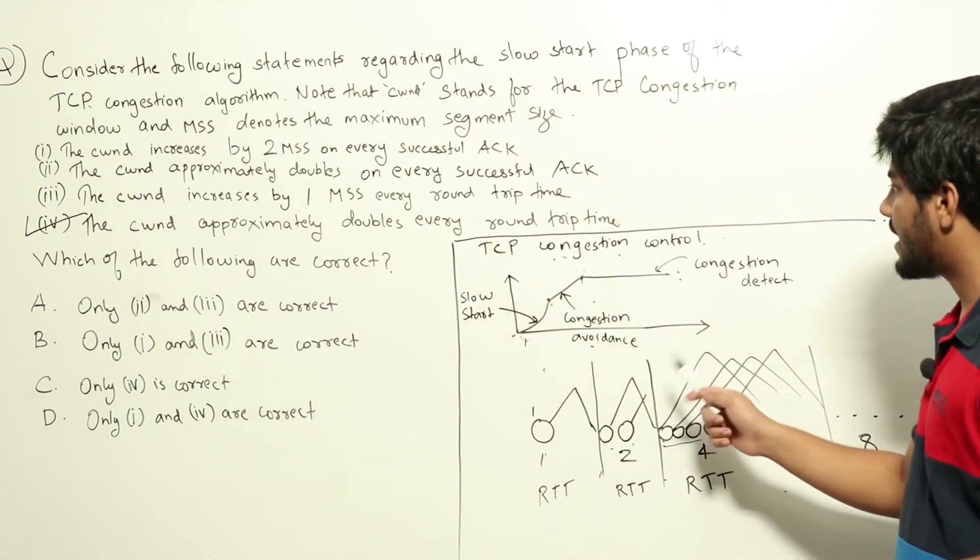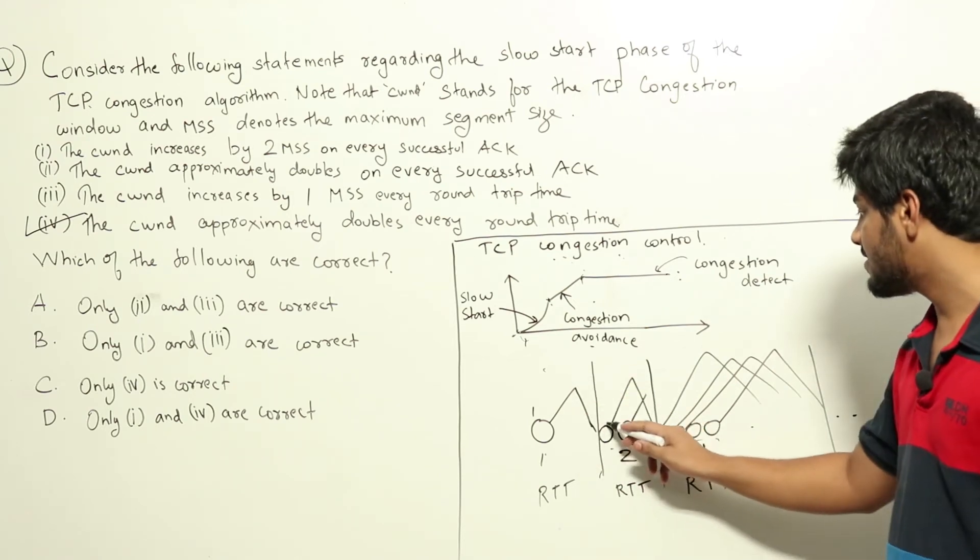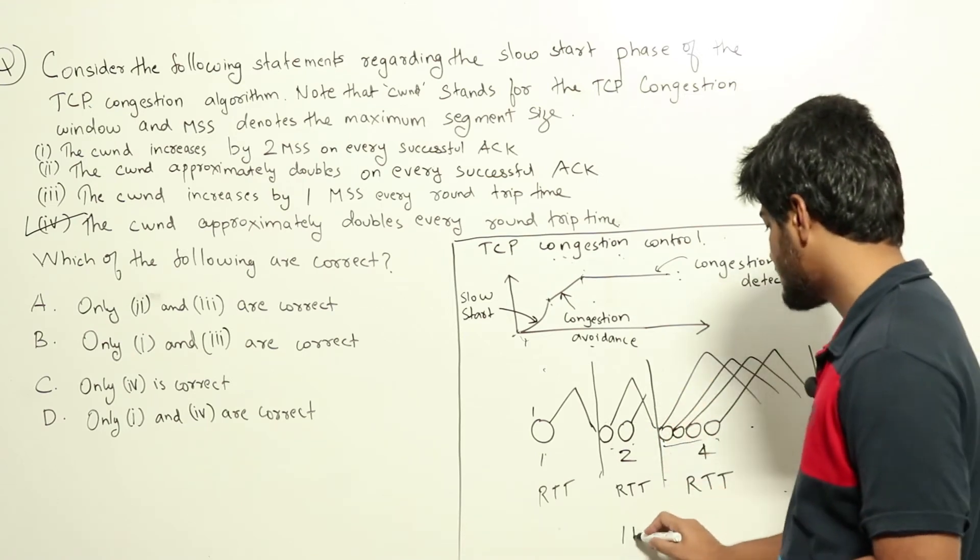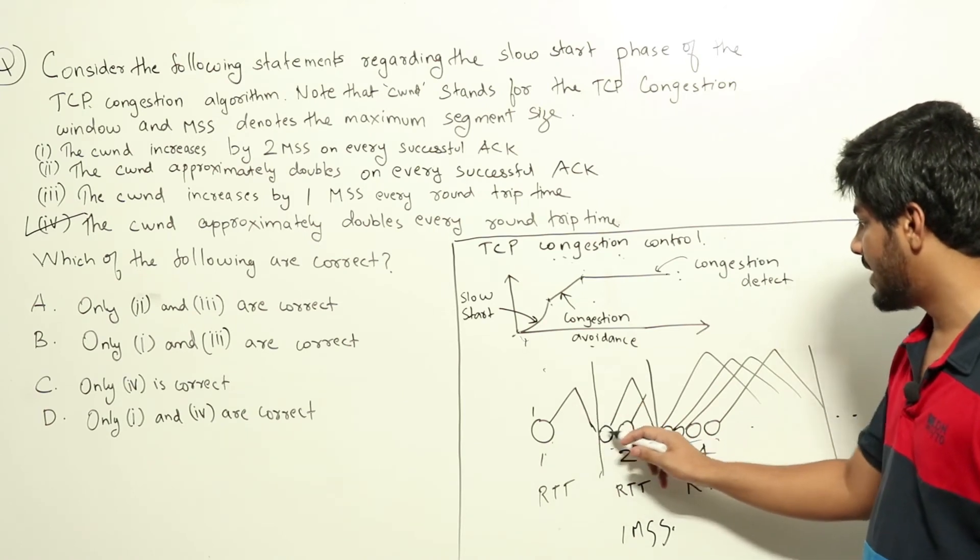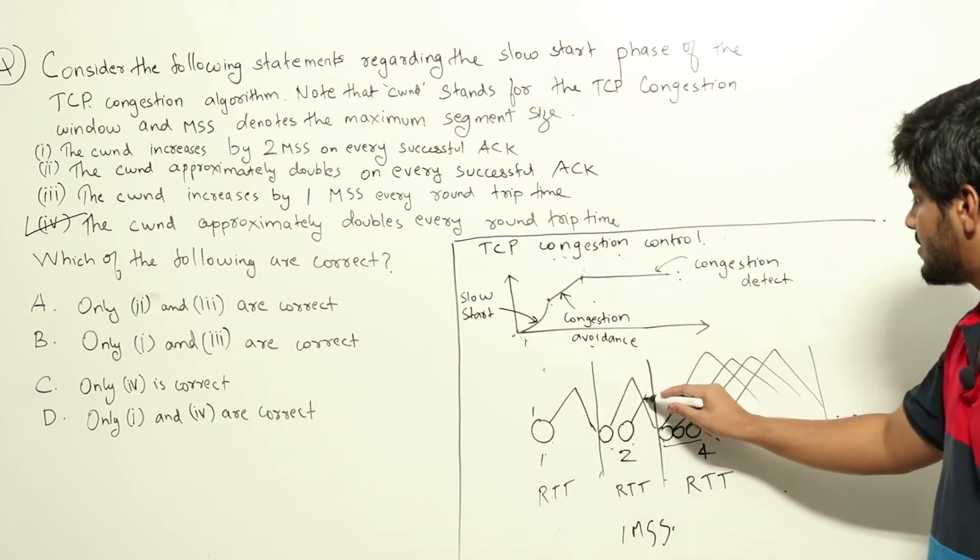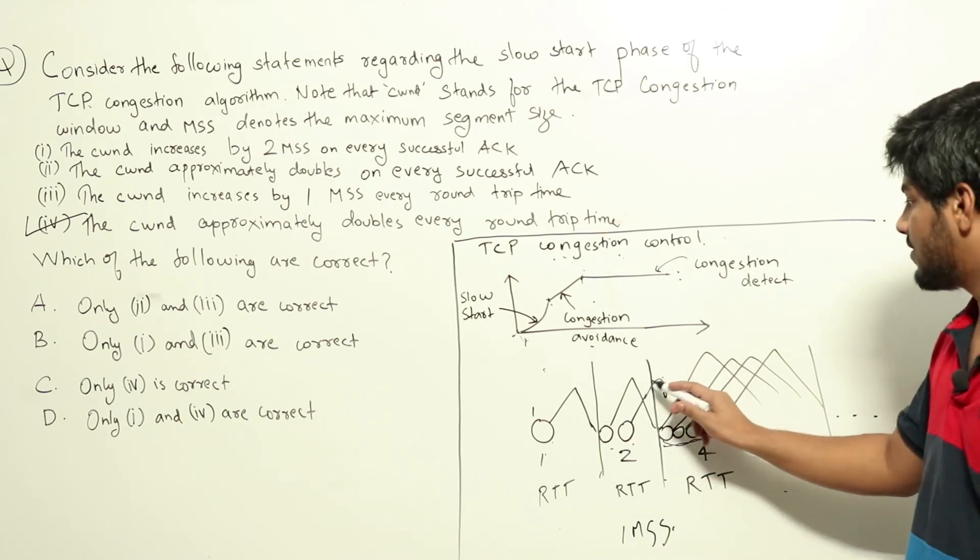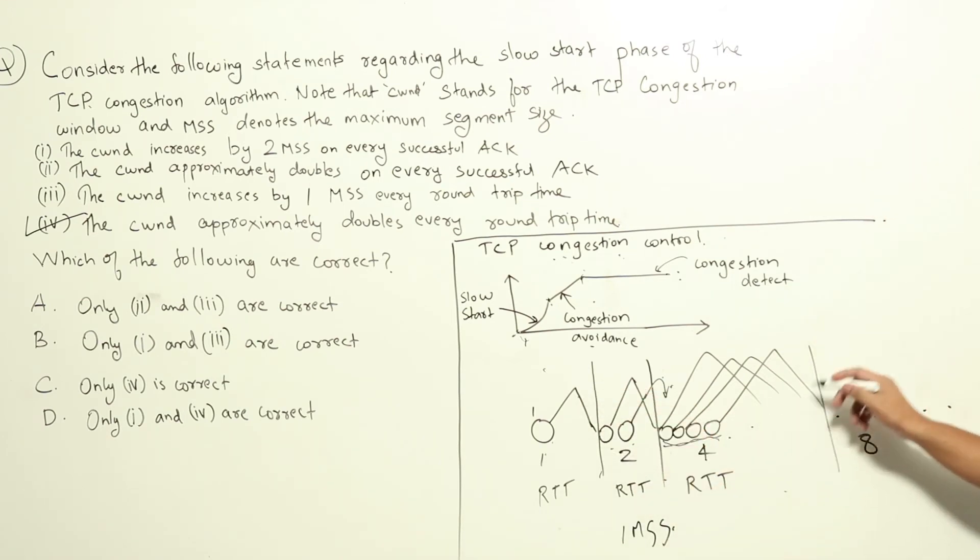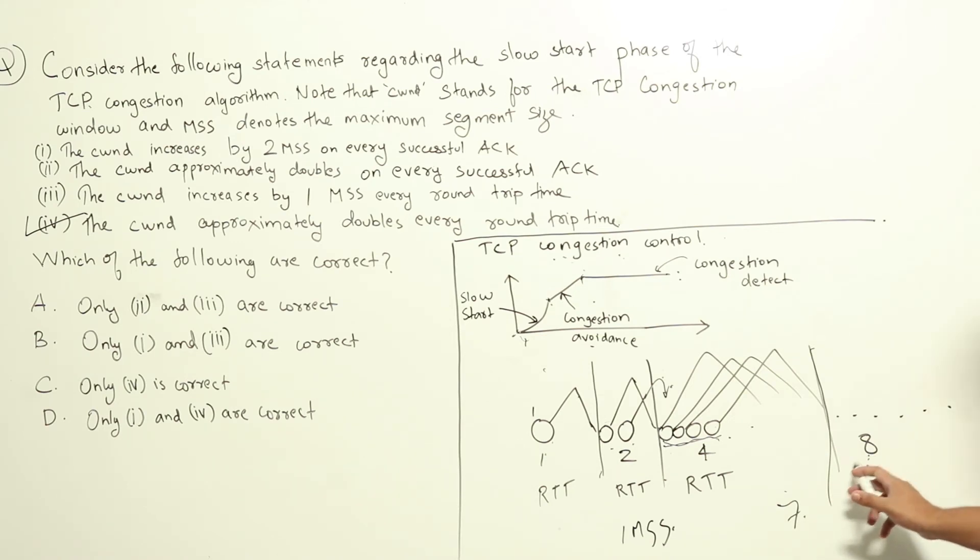So how TCP actually achieves this is after we receive every ACK we are increasing the congestion window by one MSS. Initially you can see it is one. After we receive one ACK we made it two and we sent two. Here we will be receiving two ACKs now. Now here we are sending four, so before four we have received a total of three ACKs. And similarly, after this round trip time we will be sending eight and total packets sent already was seven, so we need to receive seven ACKs before sending eight. So clearly you can see that after every ACK that window is being increased by one.